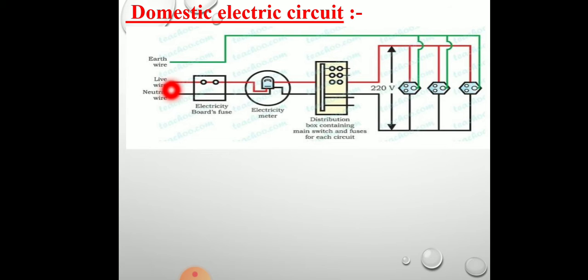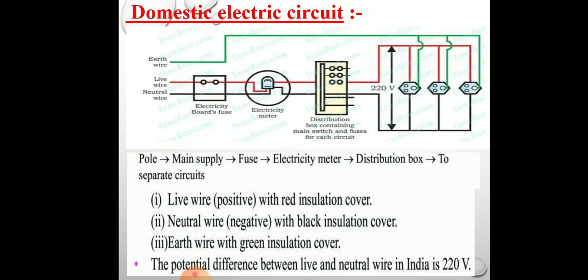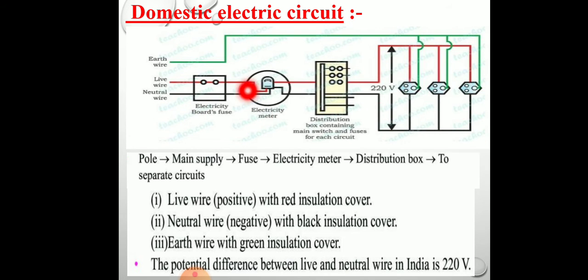So, neutral wire is black, live wire is red, and earth wire has green insulation. From the pole, the wires are carried to the main supply and pass through an electricity meter through a main fuse or MCB — miniature circuit breaker. From the main switch, the line wires in the house supply electricity to different circuits. This is how the domestic electric circuit in our home looks.